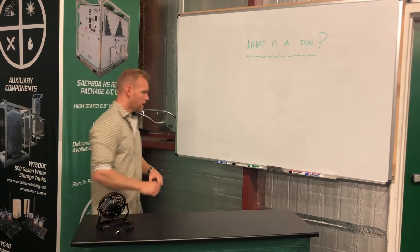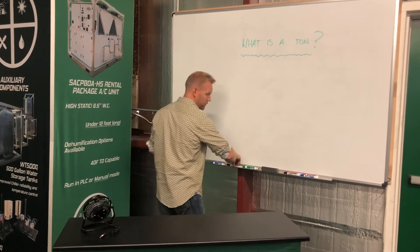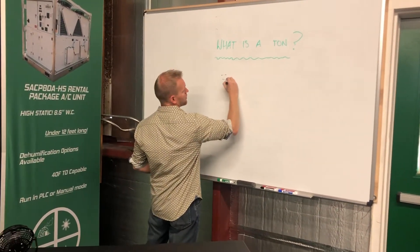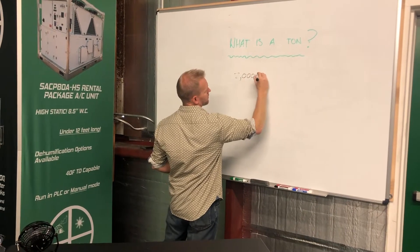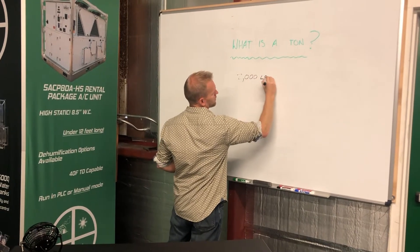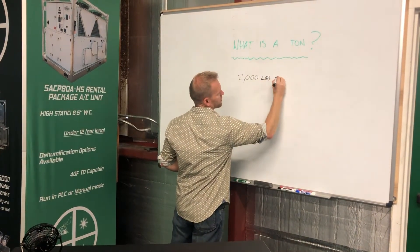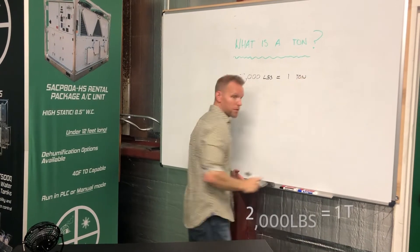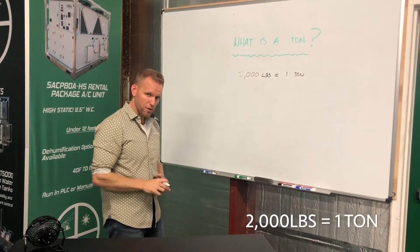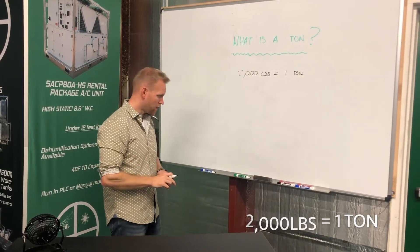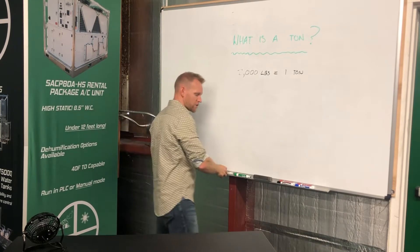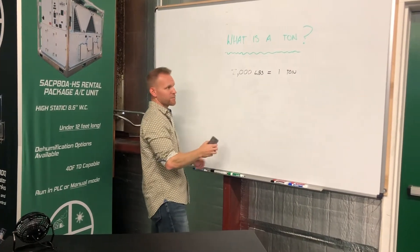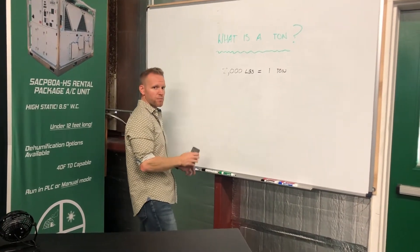So when I think of a ton, what I think of is the weight measurement: 2,000 pounds is equal to one ton. That's what's in my mind — that's what I think of whenever I think of a ton. So when we talk about air conditioning or refrigeration, why is that 2,000-pound measurement important?